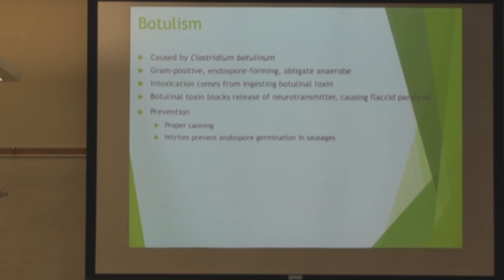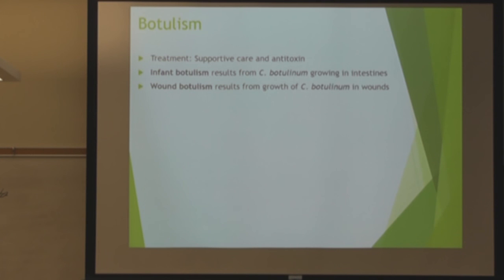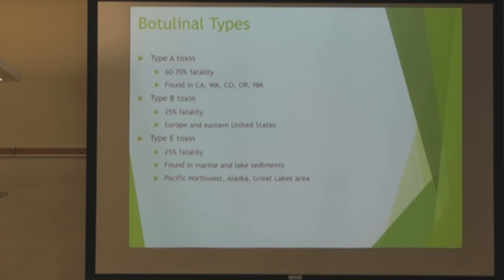Clostridium botulinum — we've gone over this before, so just know the difference between this one and tetanus. Know that it's still gram-positive and spore-forming. You have infant and wound botulism as well. For the botulism types, you can actually cross those out — that won't be on the test.